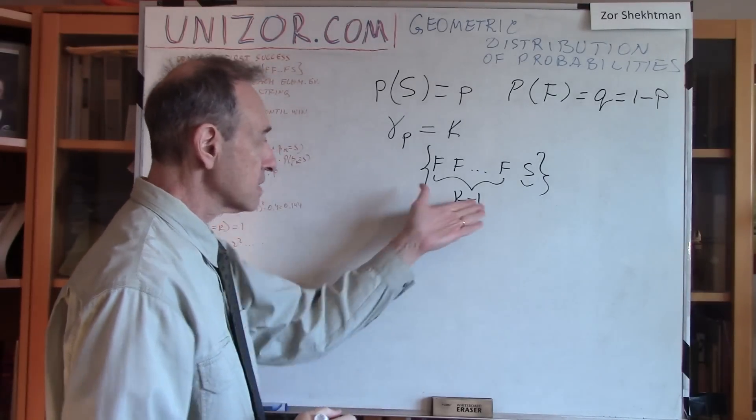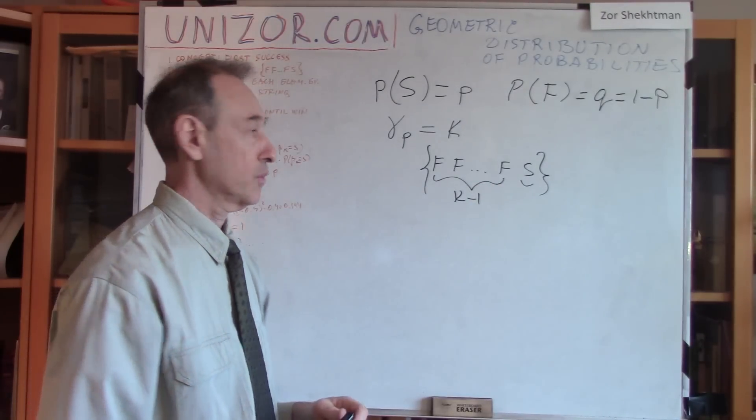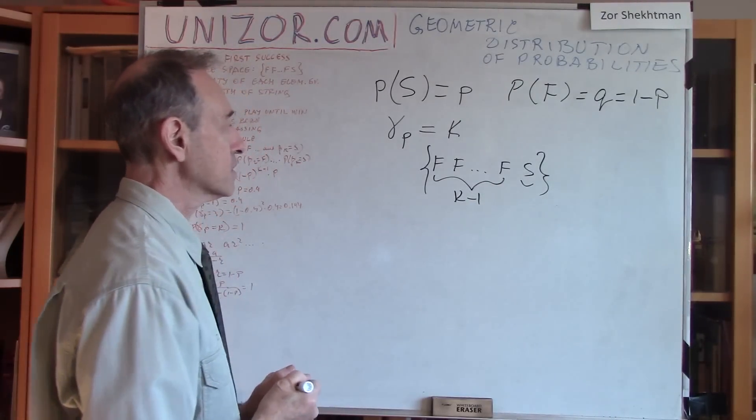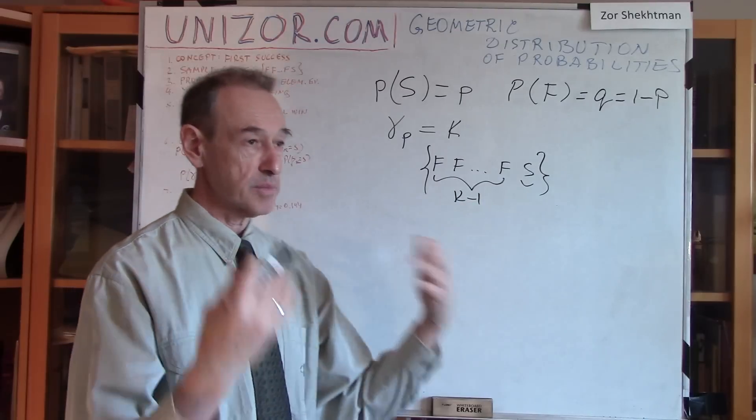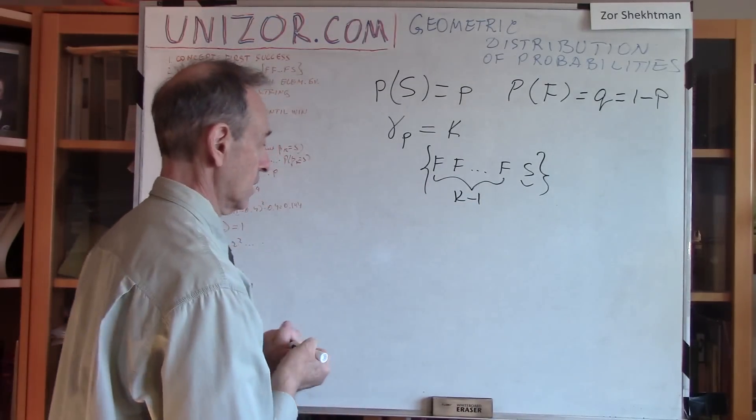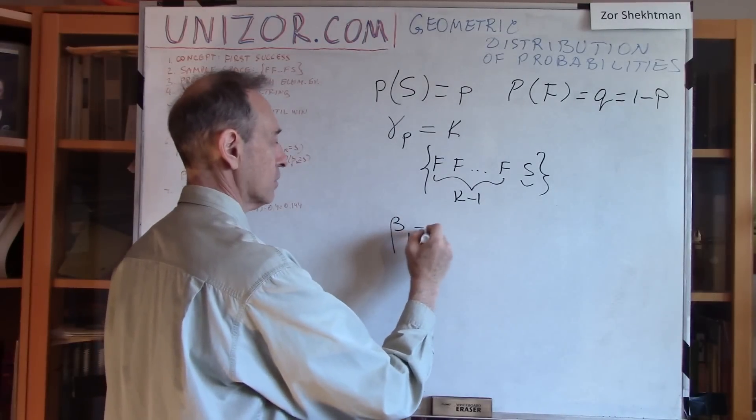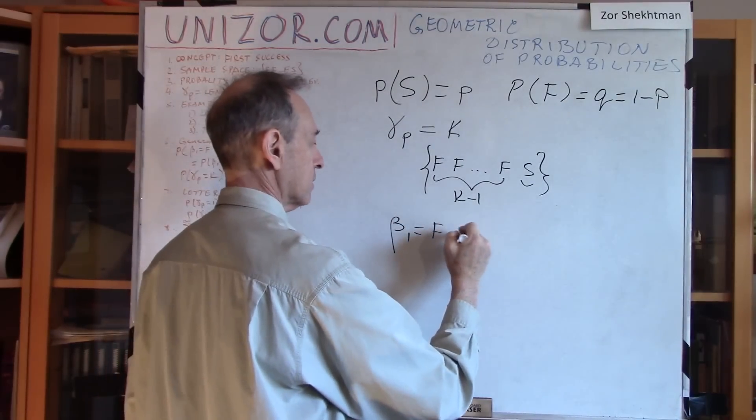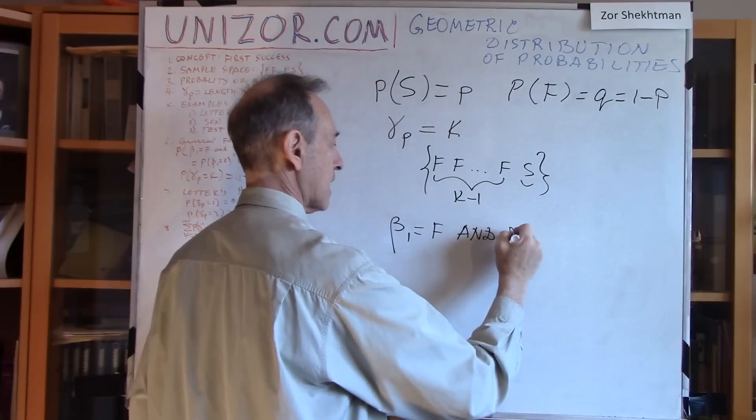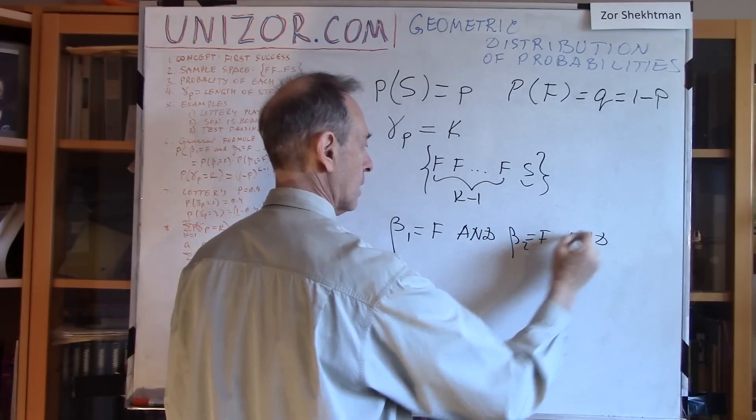So the probability of this elementary event is the probability of our random variable gamma to take the value of K. So what is this probability associated with this particular elementary event? Well, the probability of this is a combination of probabilities of the first event, first Bernoulli trial, let's call it beta 1, is equal to failure. And the second one equals to failure. And etc.